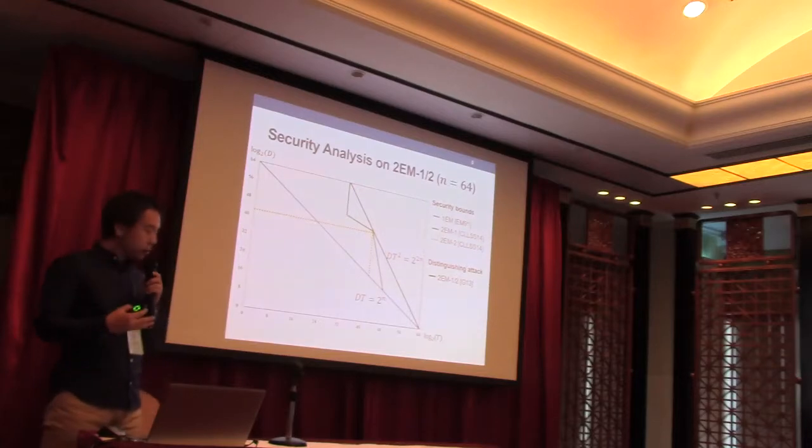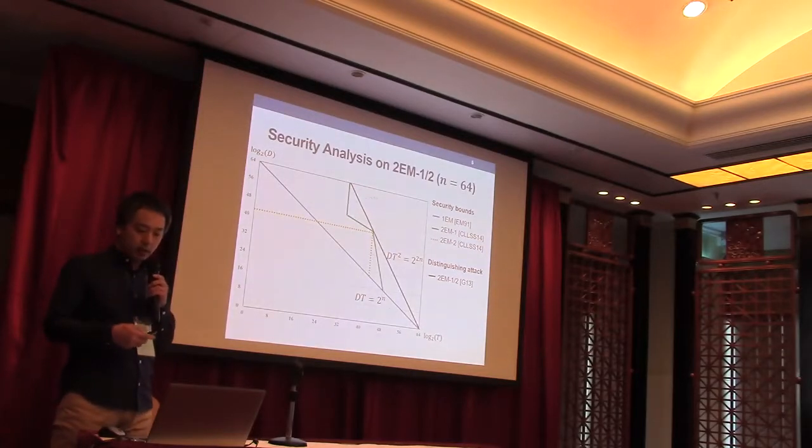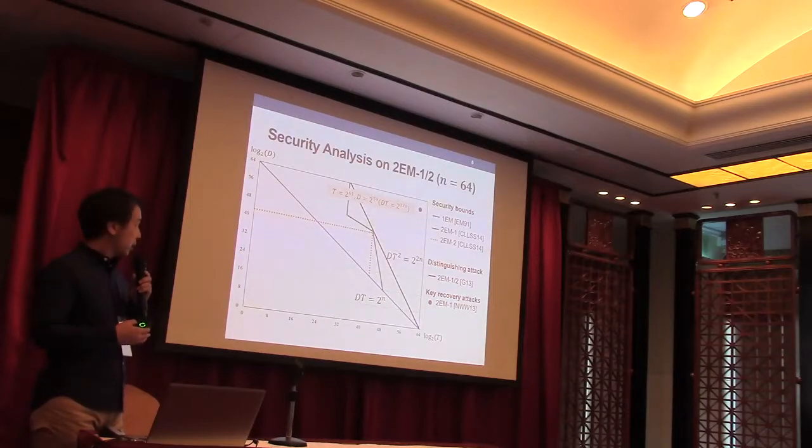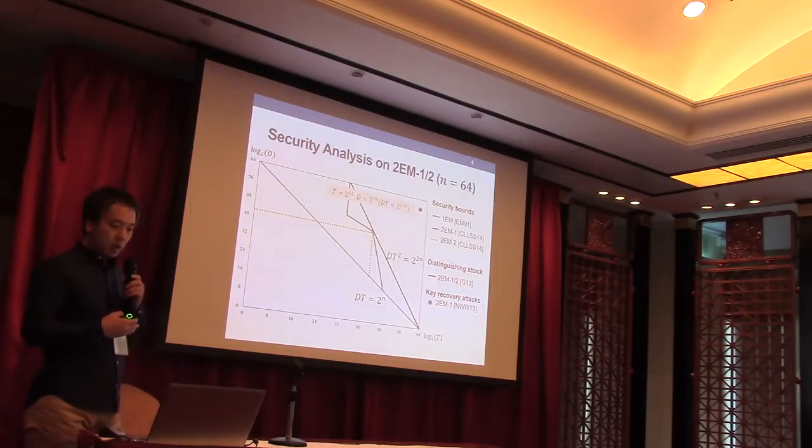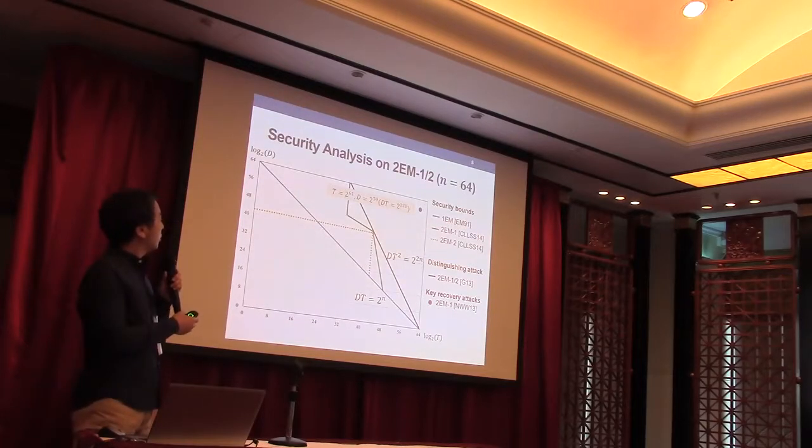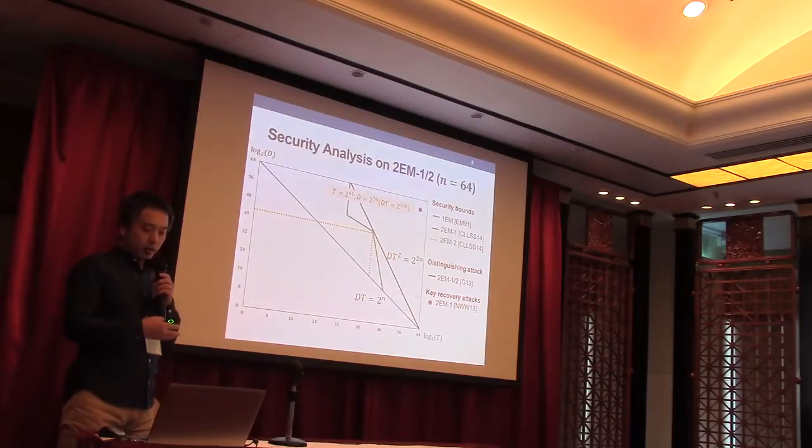So the area above this line is considered to be insecure against distinguishing attacks. In addition to distinguishing attacks, some key recovery attacks have been proposed as attacks to the block cipher LED.